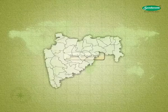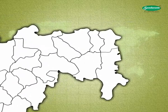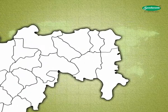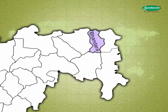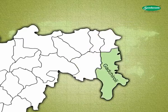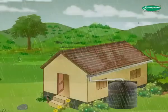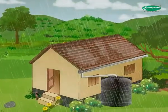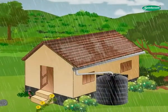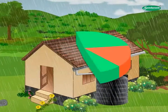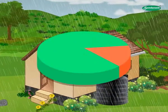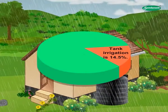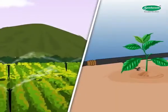In eastern Maharashtra — Chandrapur, Bhandara, Gondia, and Gadchiroli districts — tank irrigation is the main source of irrigation. In Maharashtra, 14.5% of the area is irrigated by this system.